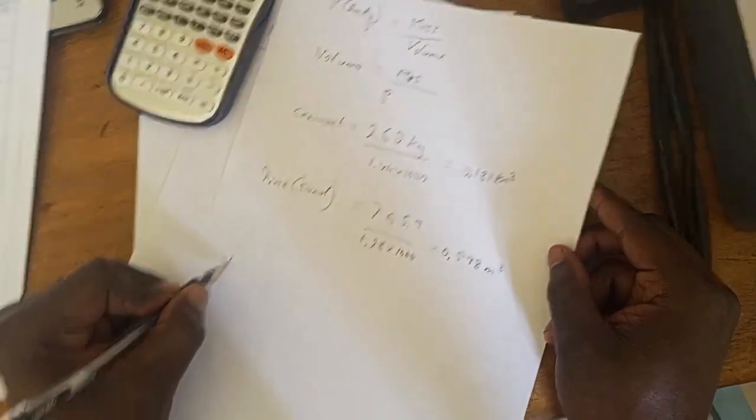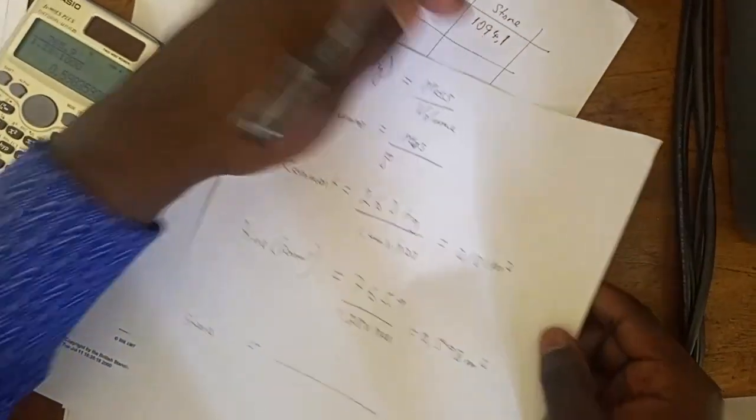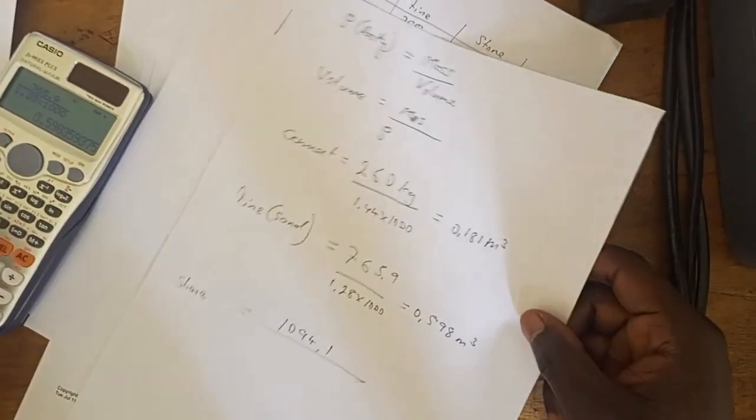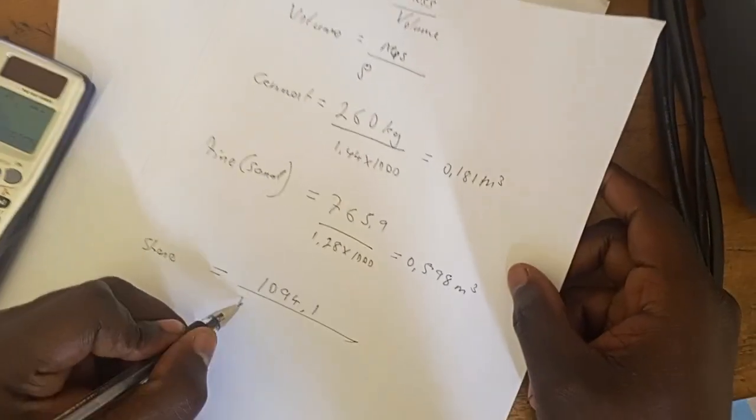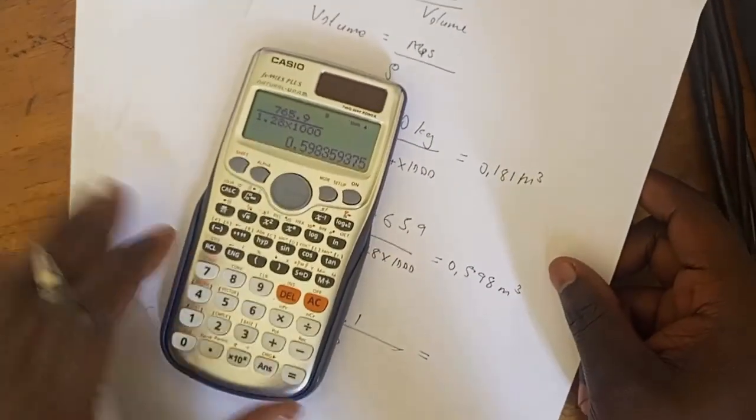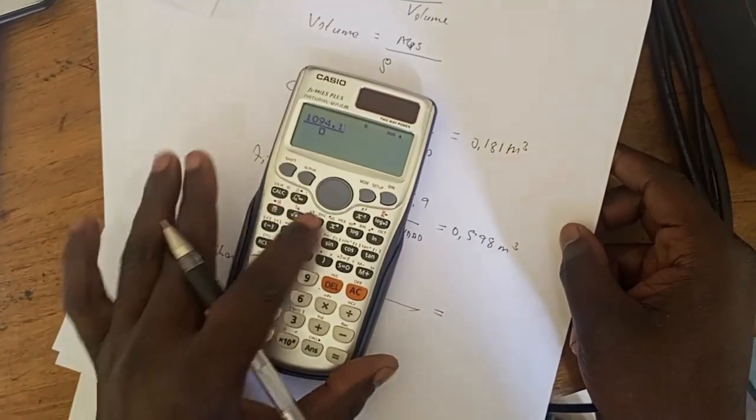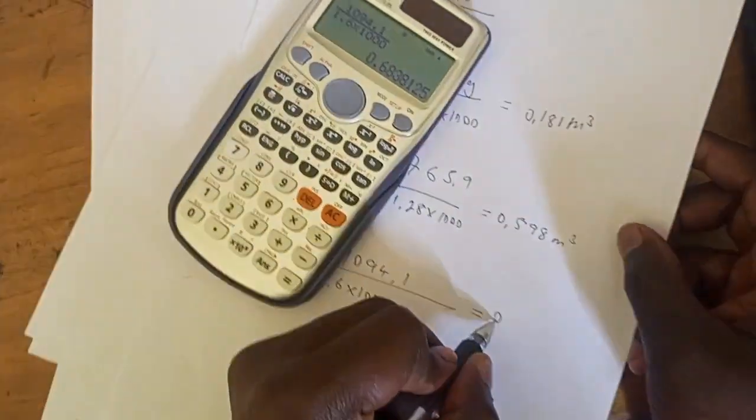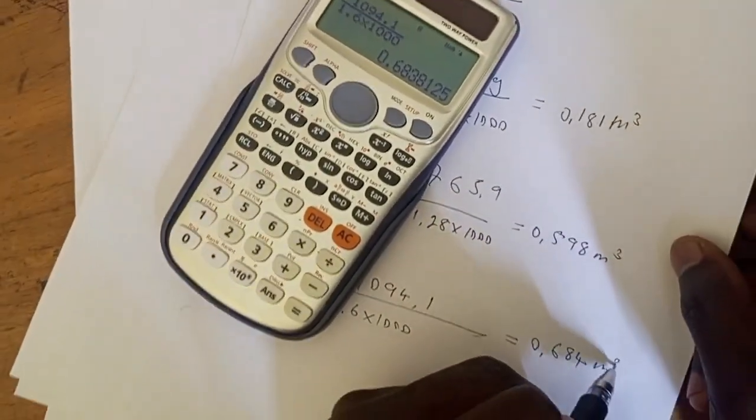Finally, we are going to get to the stones here, which is going to be the mass of the stones from this table. It's going to be 1094.1, then we divide it by the density, which is 1,600. Which is 1.6 multiplied by 1,000, which is going to give me the volume. It's 1,094.1 divided by 1.6 times 1,000 equals 0.684 cubic meters.